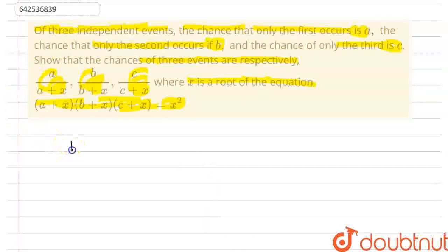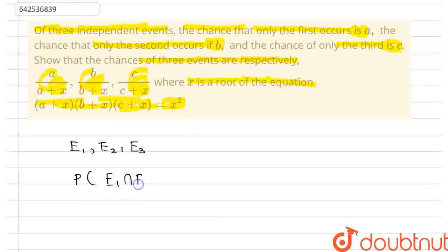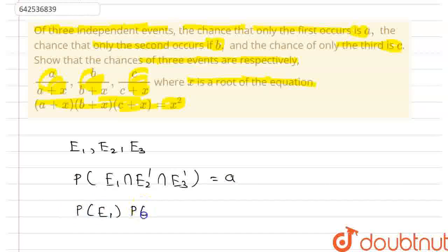Let us denote those three events as E1, E2 and E3. E1, E2 and E3 are our required independent events. It is given that the chance that only the first one occurs — that is, the probability that E1 occurs but E2 and E3 do not occur, that is E2 complement and E3 complement — is equal to A. Since events E1, E2 and E3 are independent, we can write this as probability of E1 into probability of E2 complement into probability of E3 complement equals A. Let us denote it as equation 1.